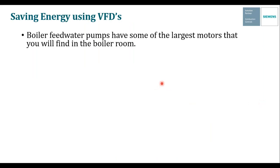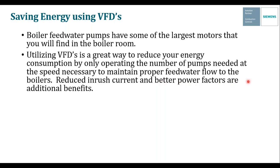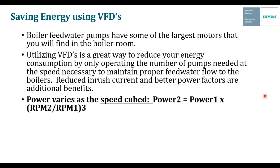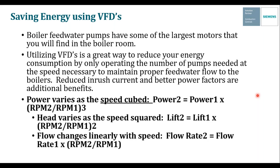Boiler feed water pumps have some of the largest motors in the boiler room — typically larger than blower motors or transfer pump motors. Utilizing a variable frequency drive is a great way to reduce energy consumption by only operating the number of pumps needed at the speed necessary to maintain proper feed water flow. Reduced inrush current and better power factor are additional benefits. The key formula is that power varies as speed cubed: power at lower speed equals power at 60 Hz times (RPM at lower frequency / RPM at 60 Hz)³. Simply dropping pump speed by 10 Hz can save nearly 50 percent of the power consumed.